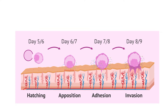Hatching is when the blastocyst gets released from the zona pellucida. Apposition is the very first loose connection between the blastocyst and the endometrium. Basically, after hatching, implantation occurs in which the blastocyst rolls on the surface and aligns with the inner cell mass close to the epithelium. Then apposition occurs — the very first loose connection between the blastocyst and the endometrium.